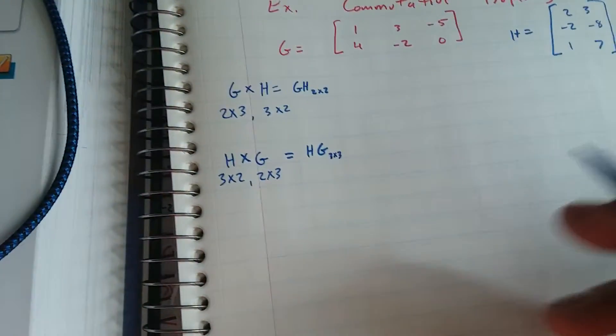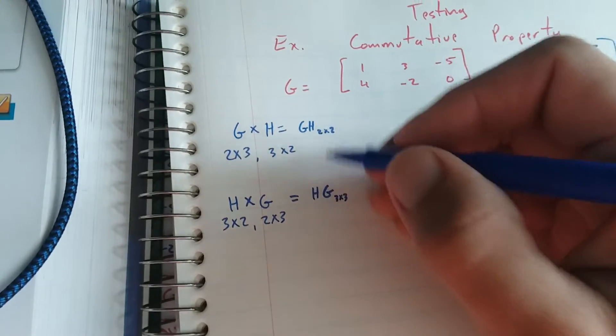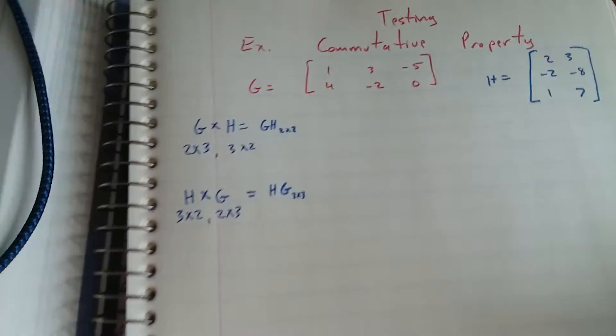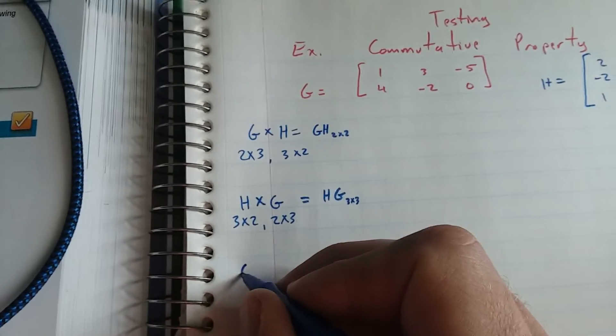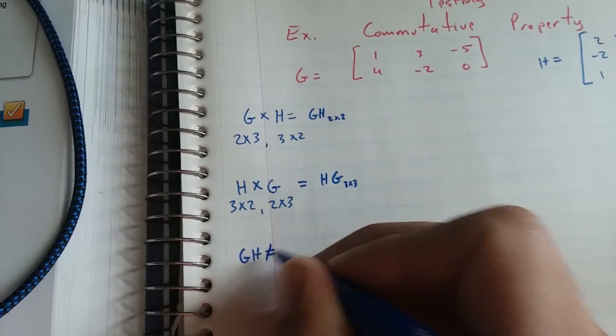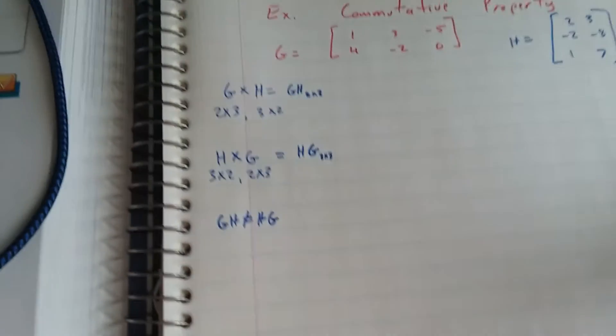These two matrices, GH and HG, have totally different dimensions. So they're not going to be equal. So we already know GH is not equal to HG. It's not commutative.